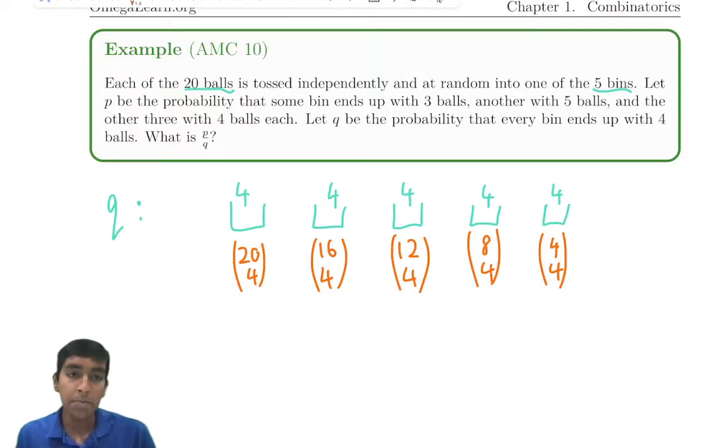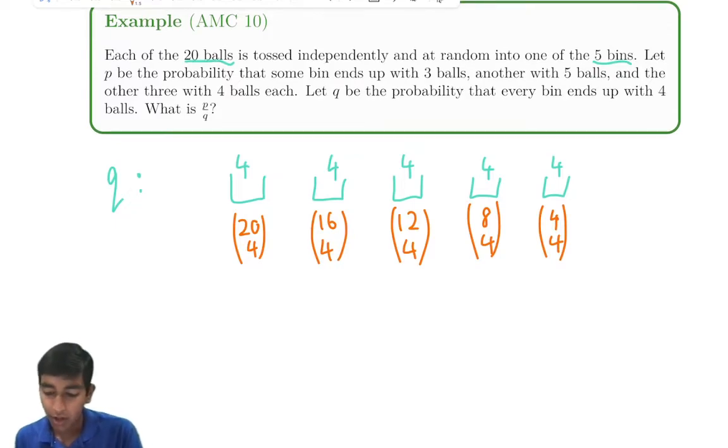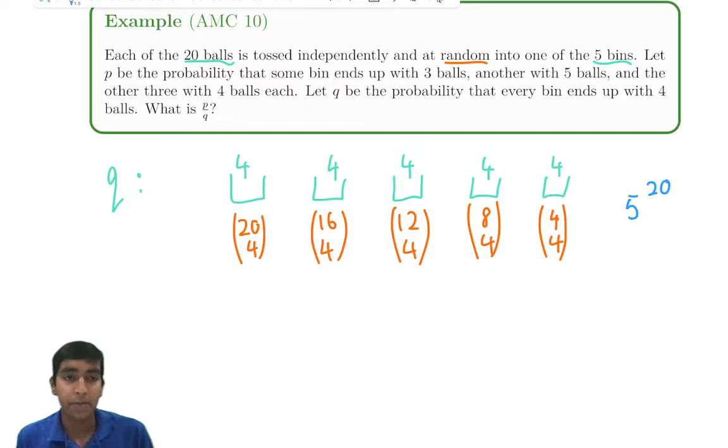Remember q is probability. So how many total ways are there to divide 20 balls amongst five bins? It's random. So each of the 20 balls has five choices. It can go in any one of the five bins. For example, it can go in the first bin, the second bin, the third bin, the fourth bin, or the fifth bin. So there are five to the 20 choices because five choices for each bin. So five times five times five, 20 times. So five to the 20. So q is just this over five to the 20.